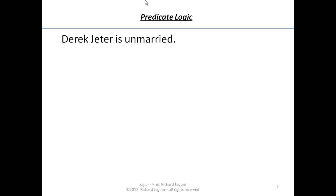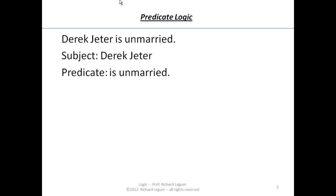To understand what I'm talking about, let's consider the sentence: 'Derek Jeter is unmarried.' A true sentence. When we look at this sentence from the perspective of grammar, it's a declarative sentence in English made up of two parts: Derek Jeter is the subject, and 'is unmarried' is the predicate. For example, 'all bachelors are unmarried' — the subject is 'all bachelors' and 'are unmarried' is the predicate.